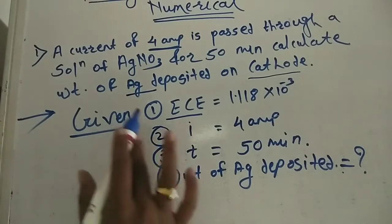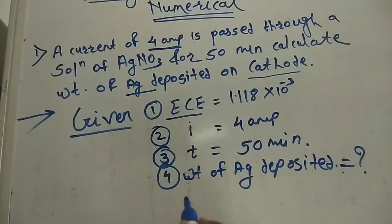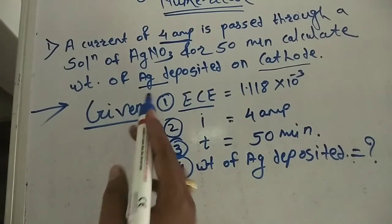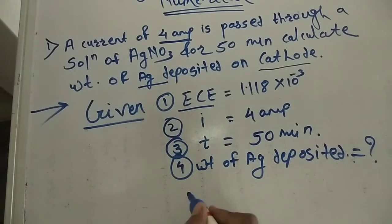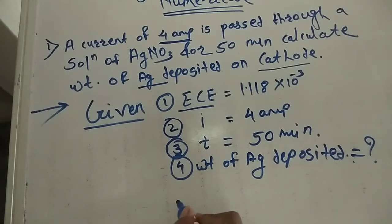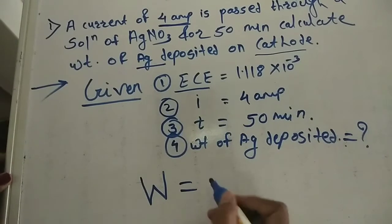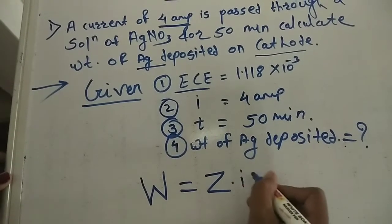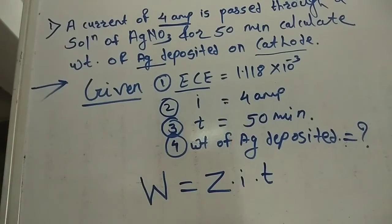First, write down the given values. We are using Faraday's law of electricity. The formula is W = Z × I × T.